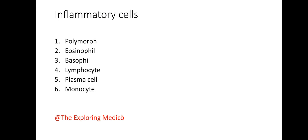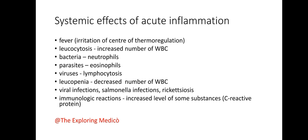Inflammatory cells include polymorphs, eosinophils, basophils, lymphocytes, plasma cells, and monocytes. Systemic effects of acute inflammation include fever from irritation of the thermoregulation center, and leukocytosis — an increased number of WBCs. Neutrophilia occurs in bacterial infections, eosinophilia in parasitic infections, and lymphocytosis in viral infections. Leukopenia, a decreased WBC count, occurs in viral infections, hormonal infections, rickettsiasis, and some leukemic infections, along with increased levels of certain substances.